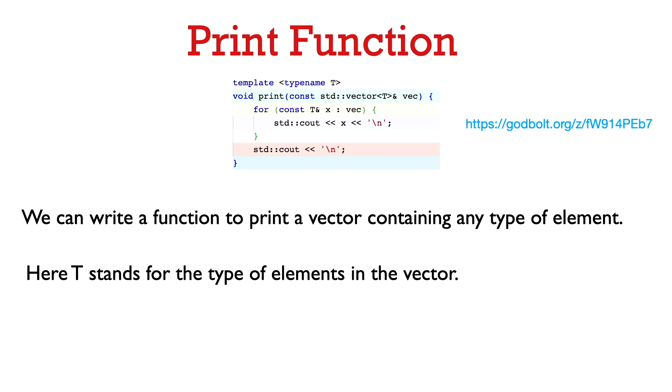All right, let's look at another example of a templated function. So here we have a print function. So what this print function can do is given a vector with an arbitrary type of element in it, it can print out the elements in the vector. So in this case, T stands for the type of element in the vector. You see that we say here, standard vector of type T.